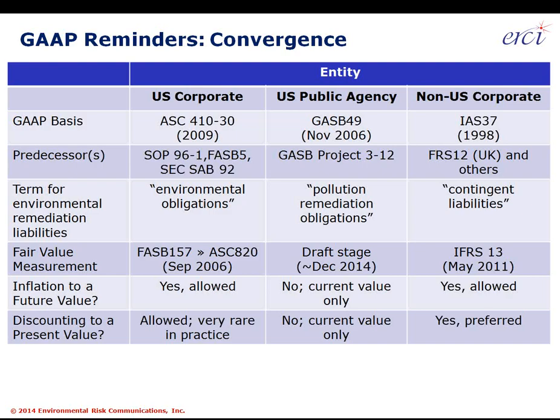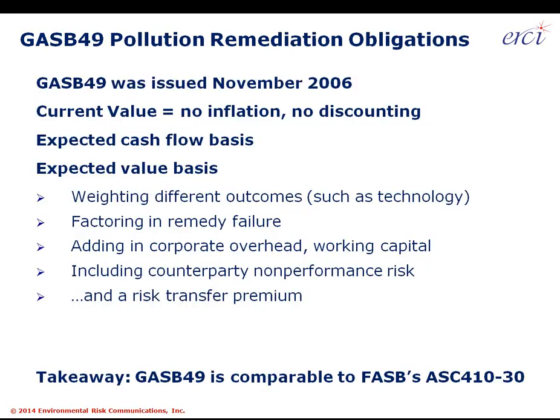Let me wrap up on the last two items here. Inflation to a future value is not allowed under GASB 49 — it's supposed to be current value only: today's dollars, as if we were settling the liability today. And there is no discounting to a present value, which is allowed in U.S. corporations and foreign corporations but is not part of stating a pollution remediation obligation under GASB 49. To sum up: GASB 49 was issued in November 2006, it's based on current value — no inflation, no discounting.